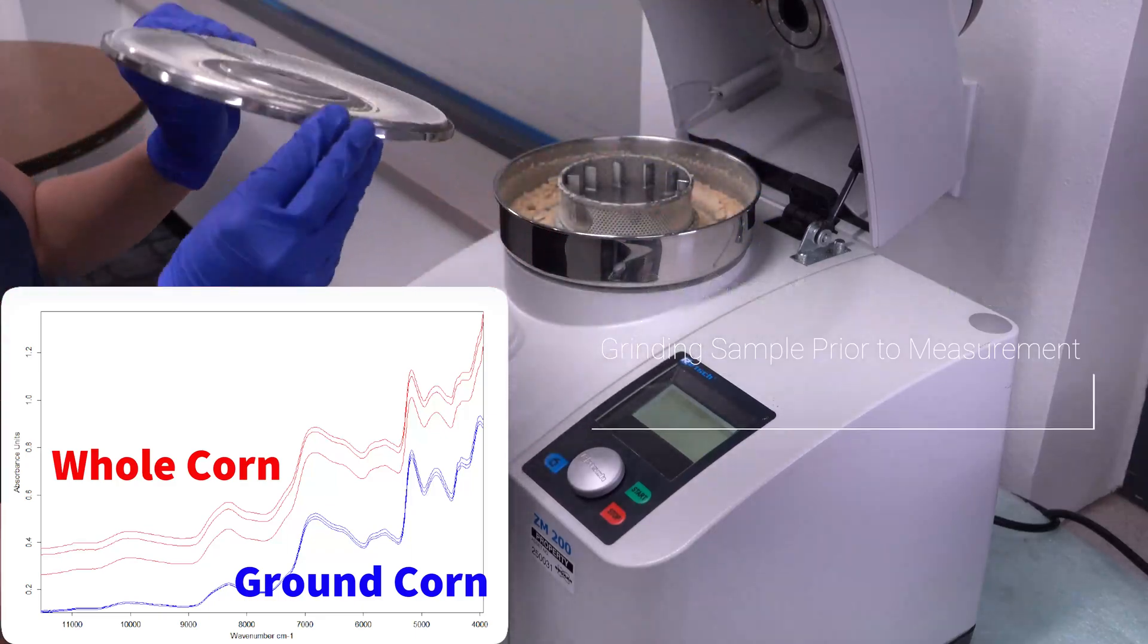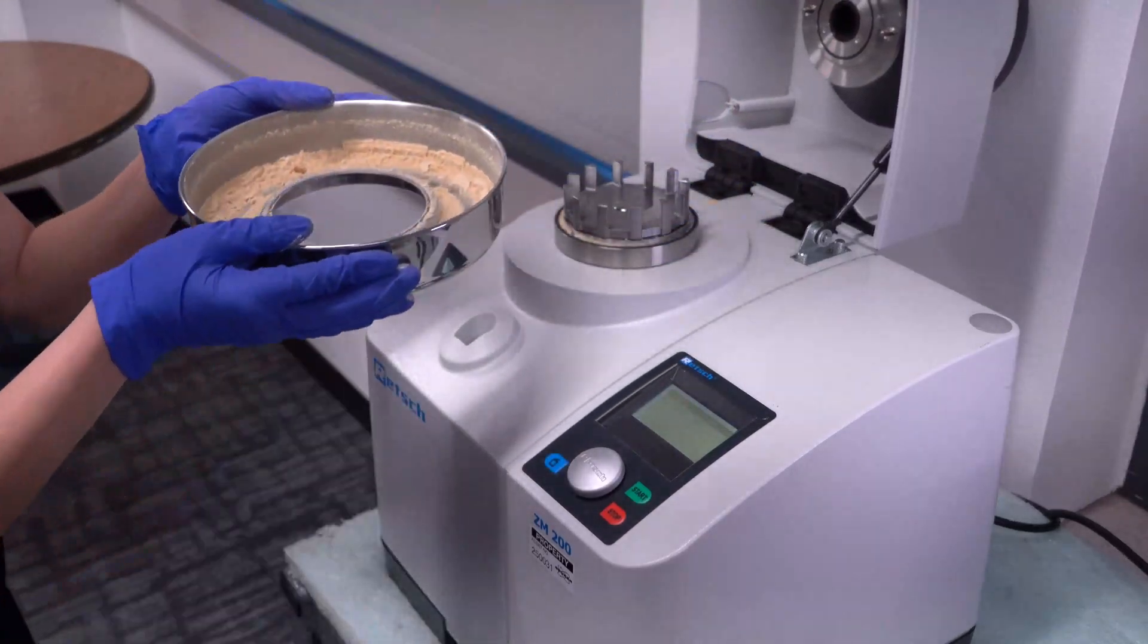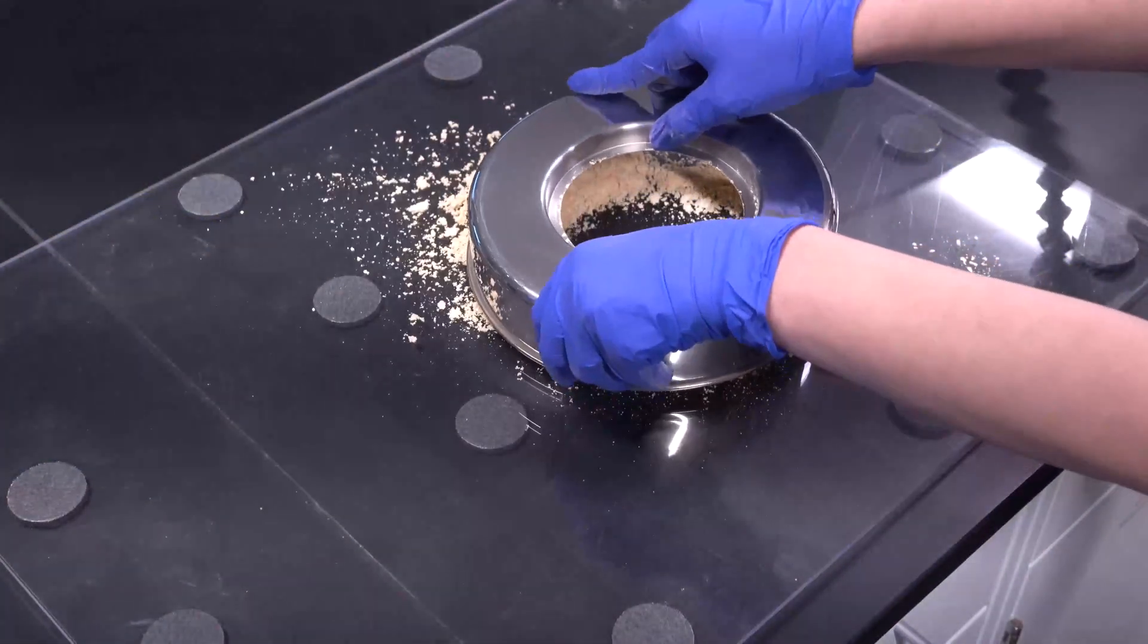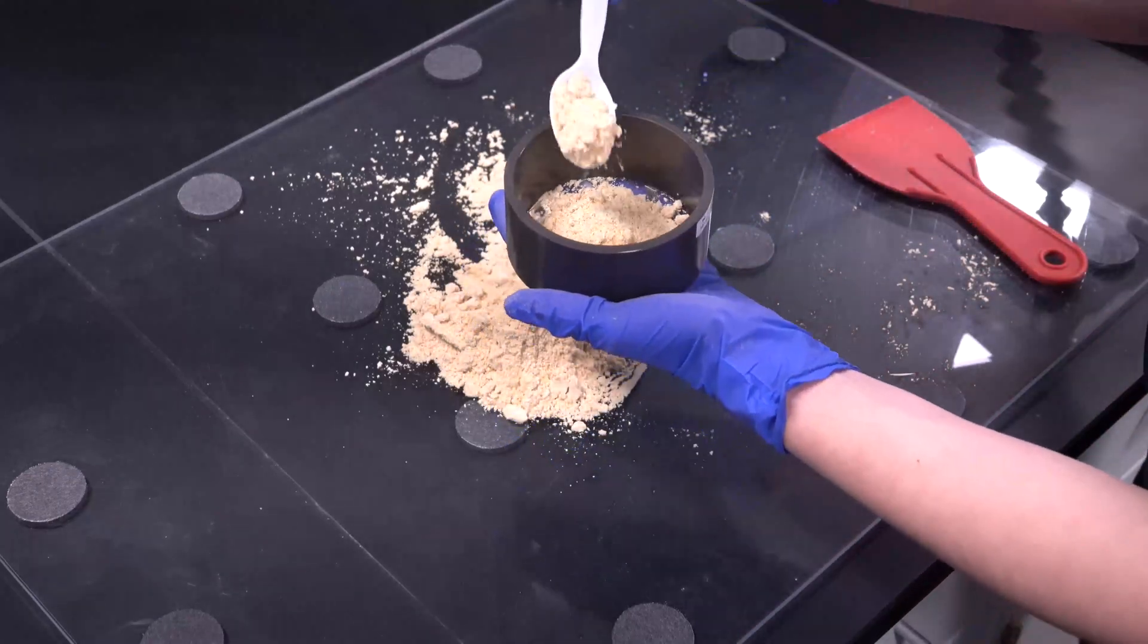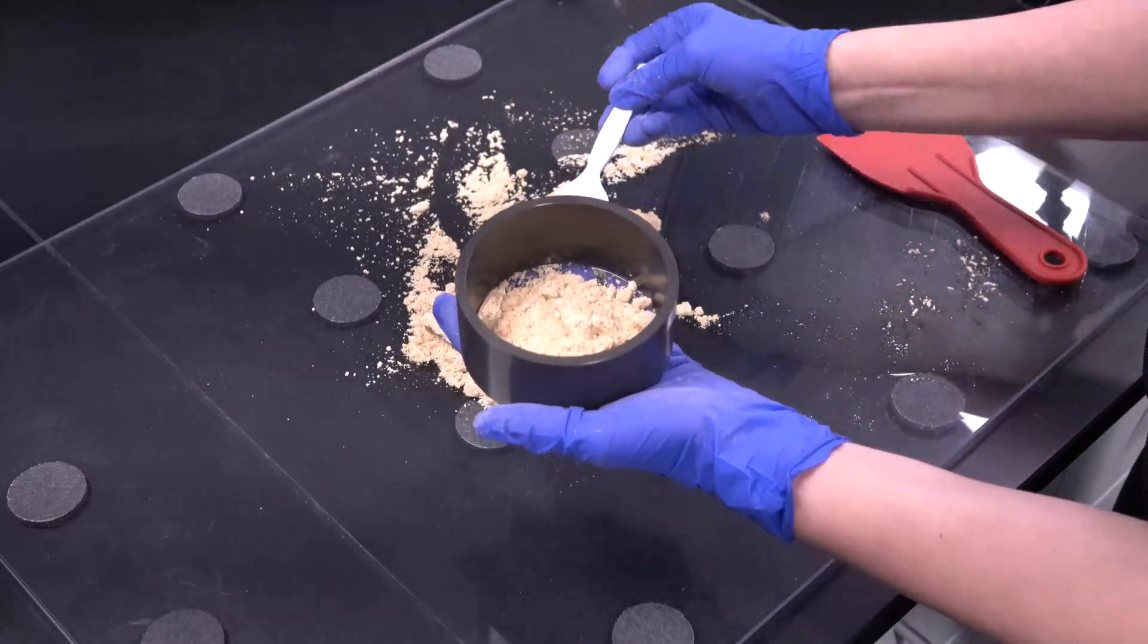In this case, for ground versus whole corn. And this is why, while we offer unground calibrations for corn, our calibrations for complete feeds are built from ground samples.